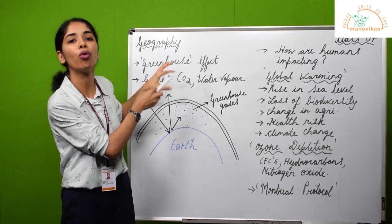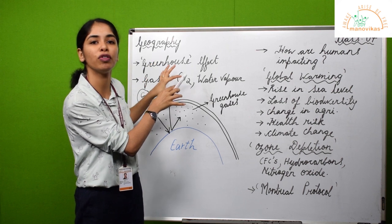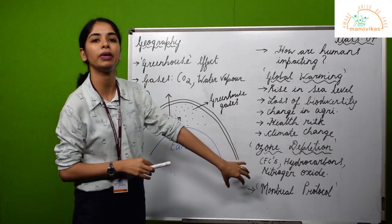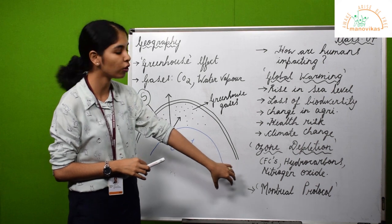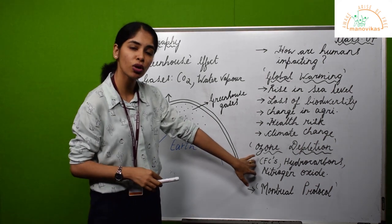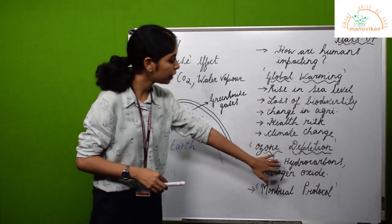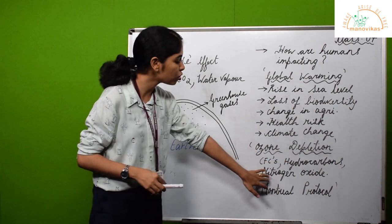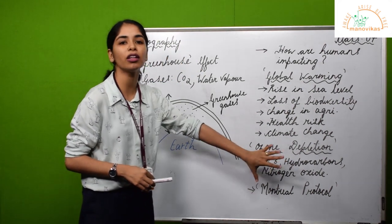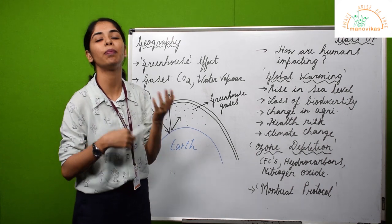How are we contributing to depleting the ozone? Just like we added more greenhouse gases in the atmosphere, we are also adding more ozone depleting substances in the atmosphere, namely CFCs or chlorofluorocarbons, hydrocarbons, and nitrogen oxide. These are the major contributors in depleting the ozone layer.